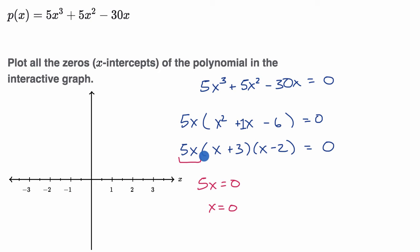The other possible x value that would make everything zero is the x value that makes x plus three equal to zero. Subtract three from both sides, you get x is equal to negative three. And then the other x value is the x value that makes x minus two equal to zero. Add two to both sides, that's going to be x equals two.